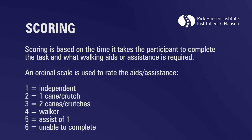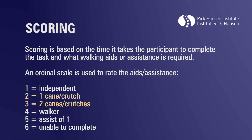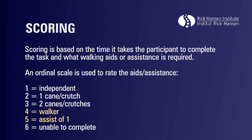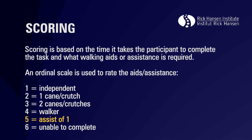Scoring is based on the time it takes the participant to complete the task and what walking aids or assistance is required. An ordinal scale is used to rate the aids or assistance. A rating of one is given to a participant who completes the task independently; two if the participant uses one cane or one crutch; three if the participant uses two canes or two crutches; four if a walker is used.